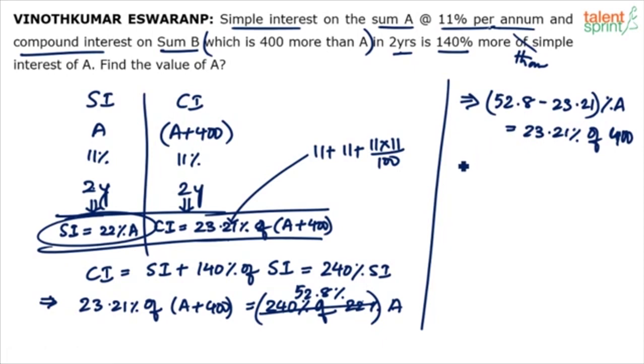What is 52.3? I mean I am not sure if you have given me the right numbers. But yeah. 52.8 minus 23.21. So 52.8 minus 23.21 is 59. So 29.59 percentage. 29.59 percent of A is equal to 23.21 percentage of 400.